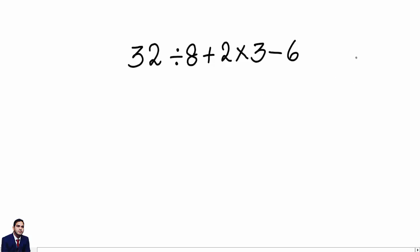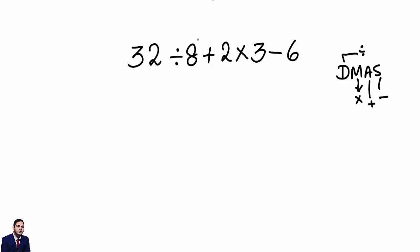you must know about the formula called the DMAS rule. D is for division, M is for multiplication, A is for addition, and S is for subtraction. This is the order of operations. In this question there is a division sign, addition sign, multiplication sign, and negative sign, so we will use this formula.